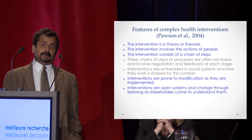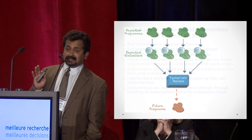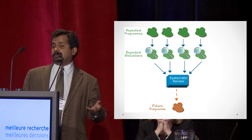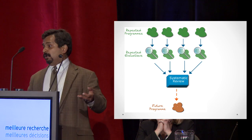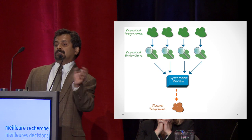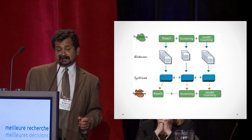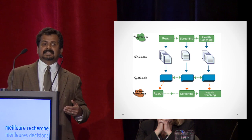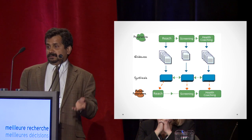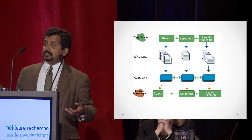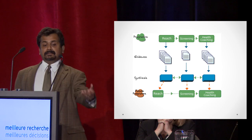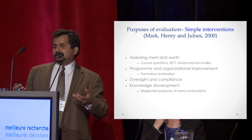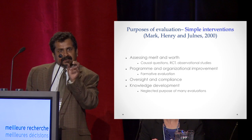Ray Pawson's more recent work, coming out of realist evaluation, focused on realist synthesis. The traditional view of synthesis looks at similar types of heart disease programs implemented across different communities, synthesizes a range of different evaluations, and asks what's the effect size. What Ray argues is we should actually be synthesizing at different parts of the intervention — looking inside the black box. Instead of looking at the entire intervention, let's look at what we can learn about reach, about screening, about health coaching across a range of different interventions. This is really about thinking more deeply about evidence itself. I find a discrepancy between what communities say they find useful evidence and what academics say is useful evidence.